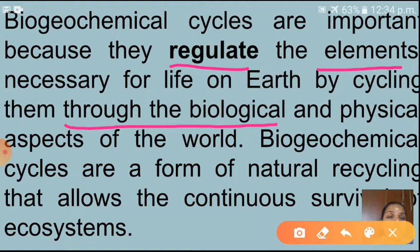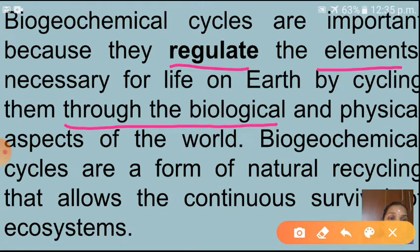With the help of biogeochemical cycles, important nutrients are regulated for life on Earth by cycling through biological and physical aspects. We get enough oxygen and other elements from our atmosphere and earth. Biogeochemical cycles are a form of natural recycling that allows the continuous survival of ecosystems.